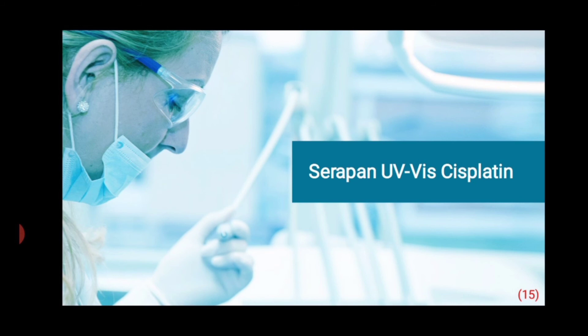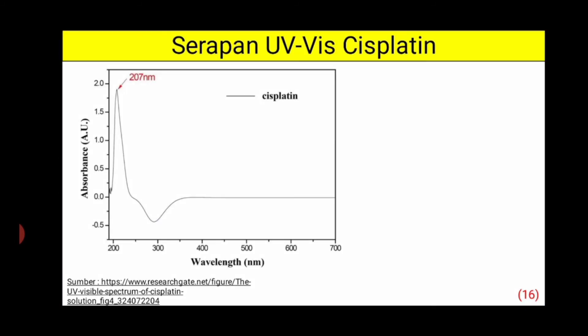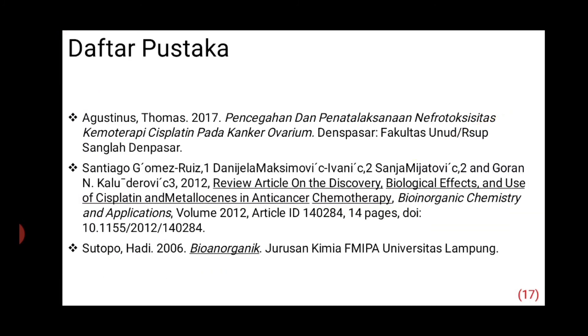Serapan UV-Vis Cisplatin. Serapan UV-Vis Cisplatin — serapan maksimalnya ada di panjang gelombang 207 nm, yang merupakan peak tertingginya.